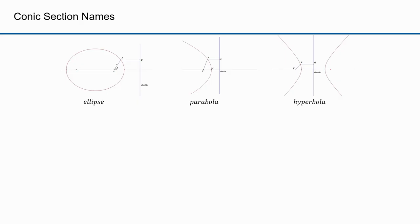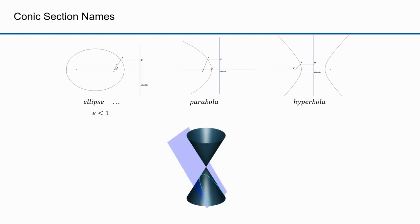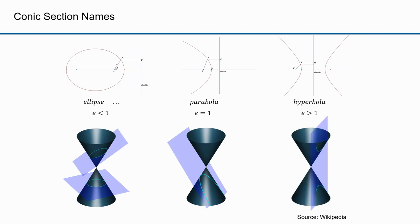I want to talk about the derivation of these words. An ellipsis is a grammatical construction where an element in a sentence is omitted — mathematically this corresponds to e < 1. A parable is a short story that makes some parallel to life; it corresponds to the shape formed with a plane parallel to the cone's side, with an eccentricity of 1. Hyperbole is an exaggeration or overstatement, corresponding to e > 1. And that is the actual source of all these terms.